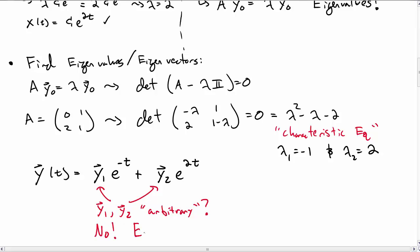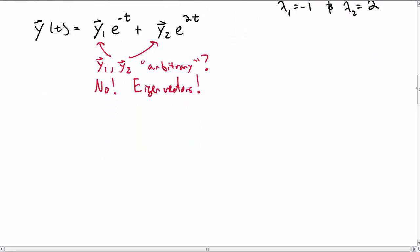Well, no, not completely. They're not completely arbitrary because they're eigenvectors of our matrix. And so to go further, we need to figure out what those eigenvectors are.